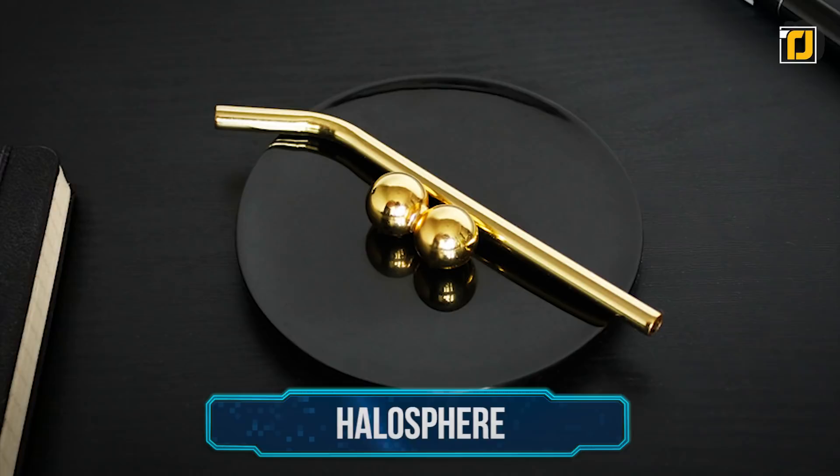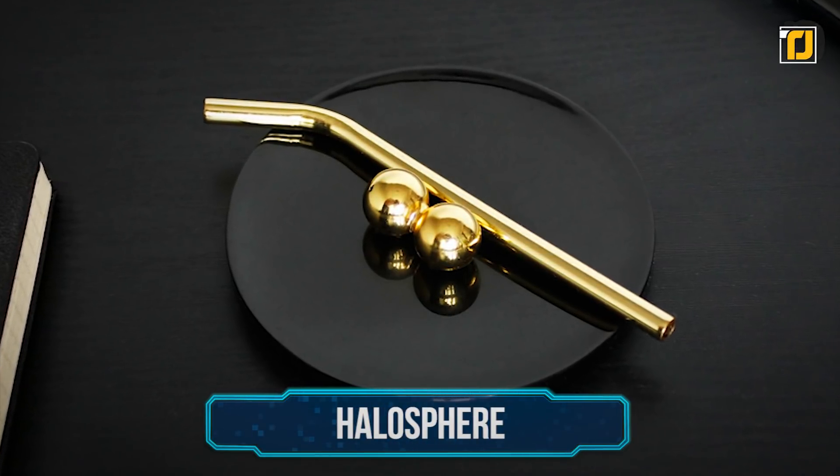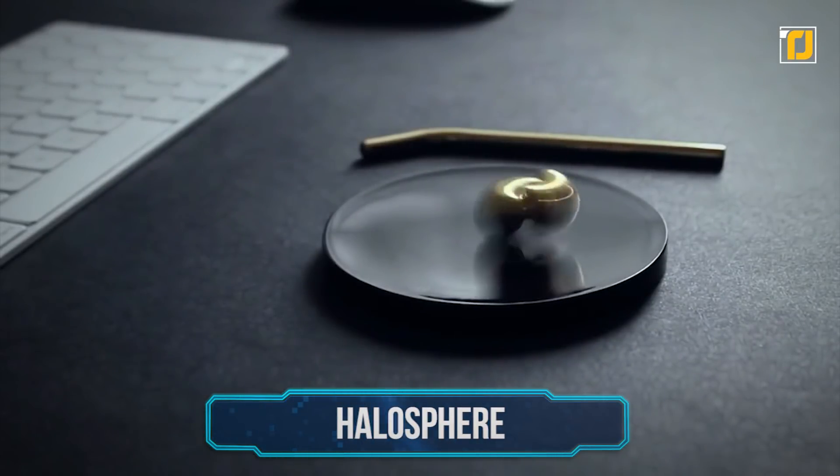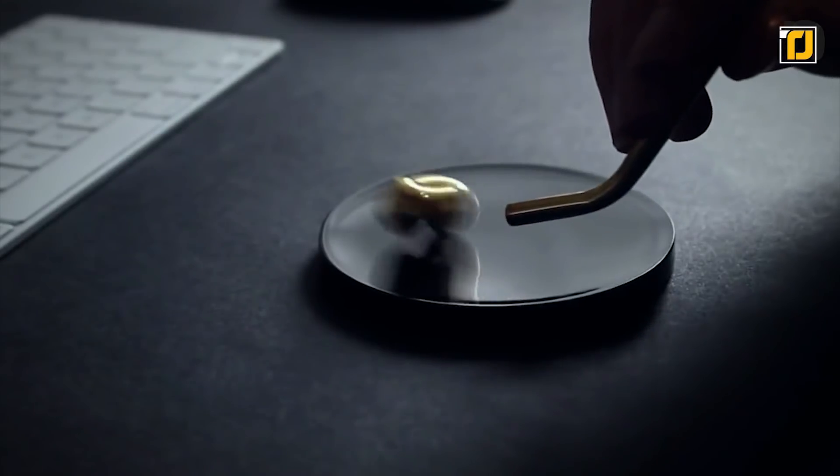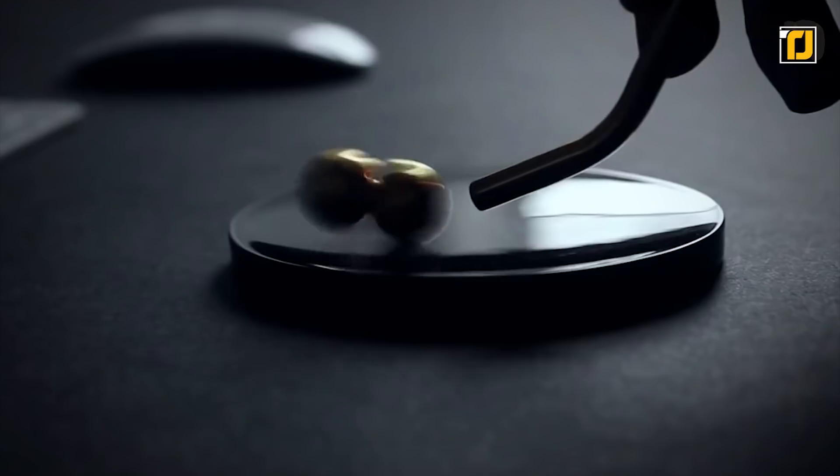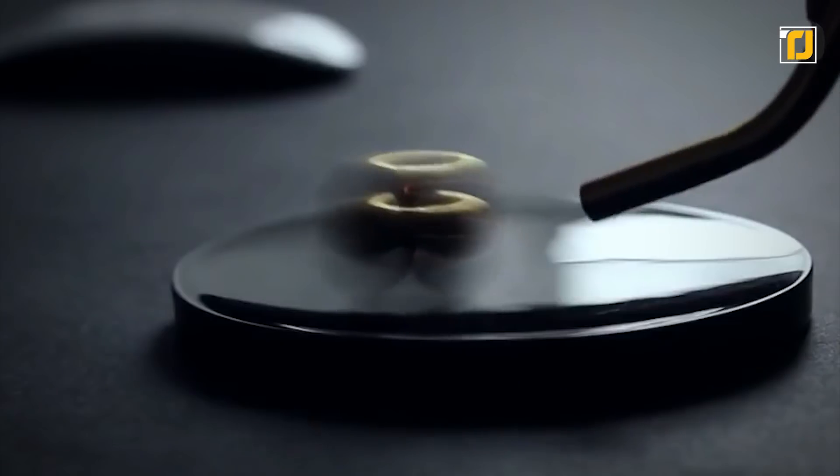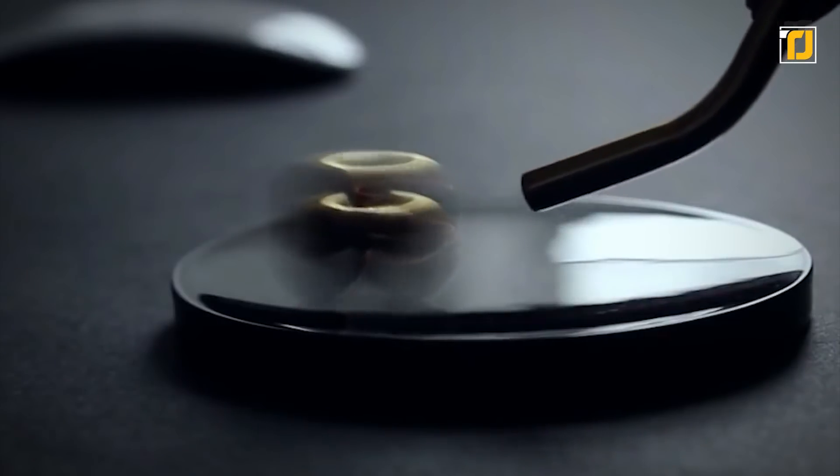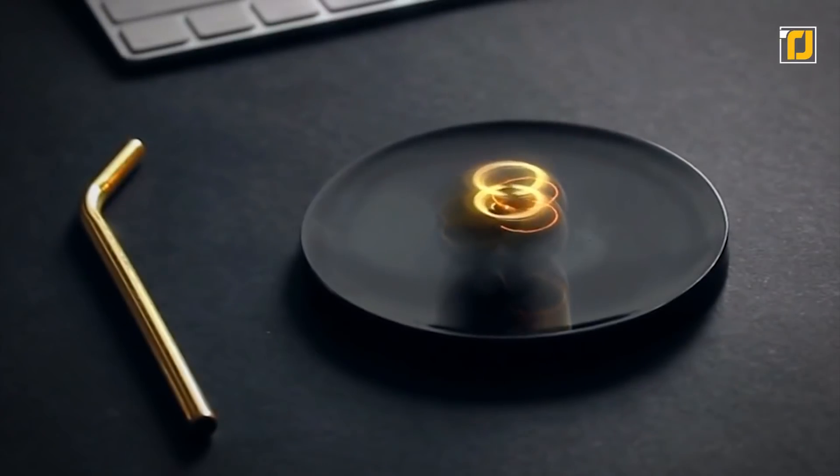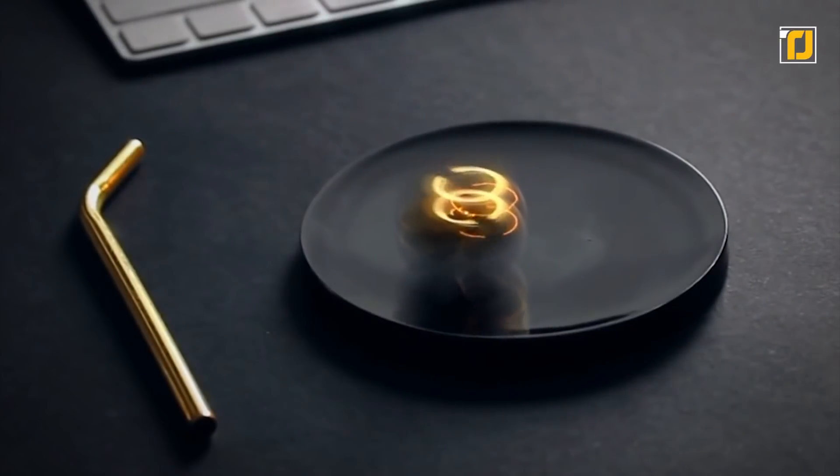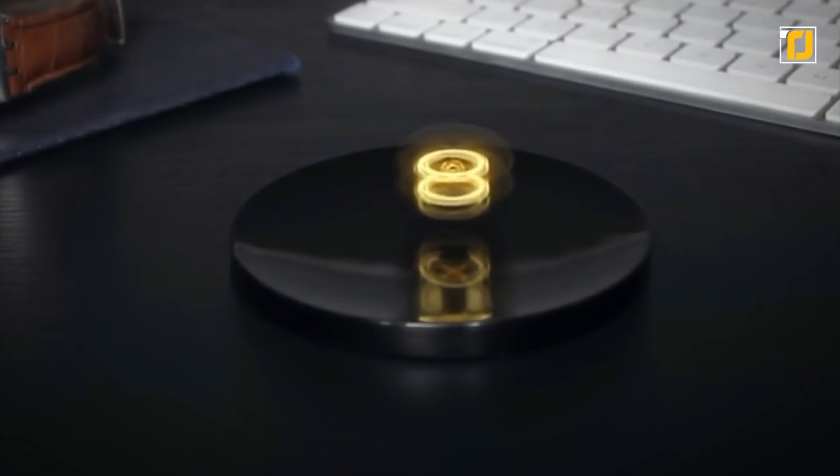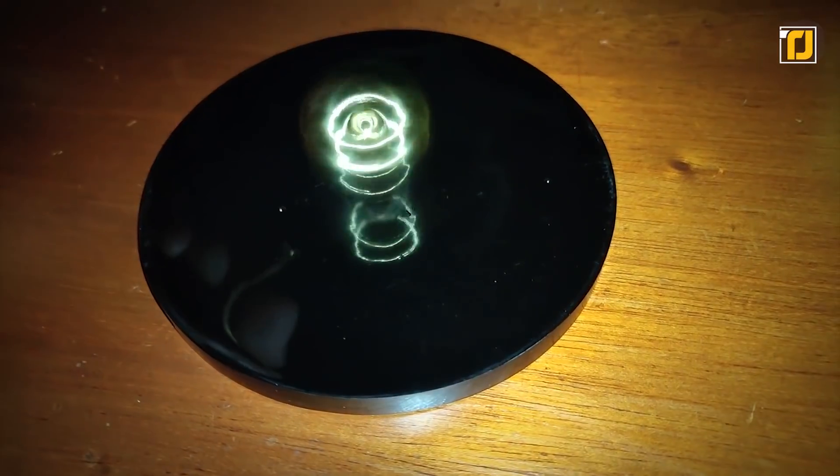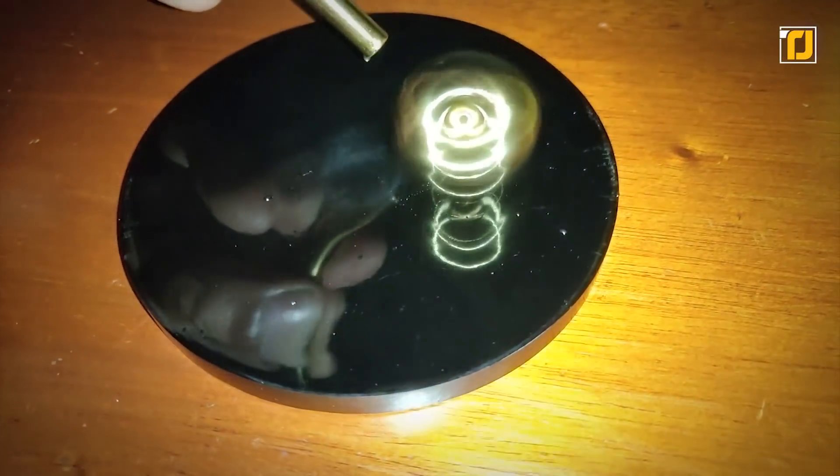Number 5. Halosphere. The Halosphere can spin as fast as 3600 rotations per minute, and that's not even the most interesting thing about it. If you spin the Halosphere in front of a light source, you'll see why it's called that. A beautiful golden halo forms over the two spinning balls, and it's a truly beautiful thing to see. The Halosphere is made out of gold-plated steel, so it's the perfect long-lasting desk toy for your office or work desk.